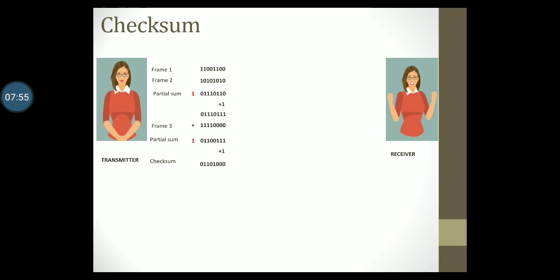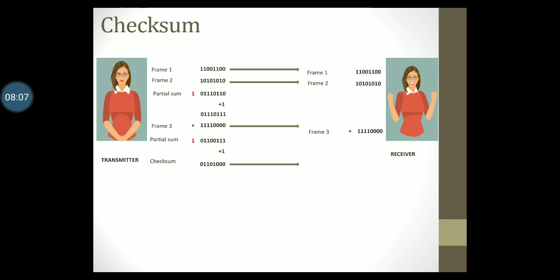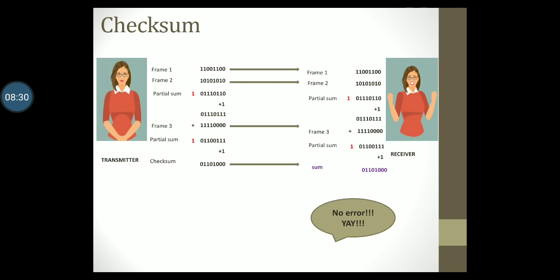The transmitter will now send frames one, two and three to the receiver, and also transmits the checksum. The receiver gets the data along with the checksum and does the same procedure of adding the frames together. Finally the receiver gets the calculated sum and compares this with the checksum that was received from the transmitter. If the two sums are the same then no errors were detected at the receiver end. If any error is detected the receiver can ask for a retransmission of the entire data.